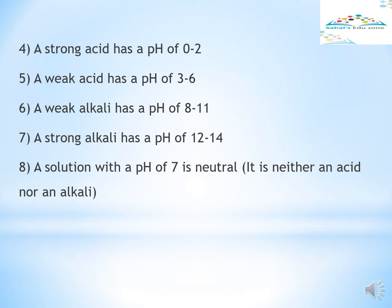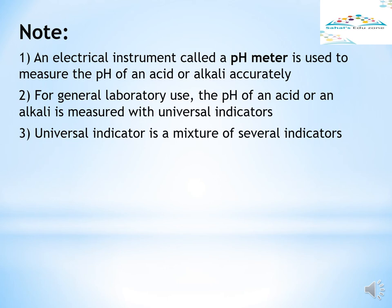A strong acid has a pH of 0 to 2. A weak acid has a pH of 3 to 6. A weak alkali has a pH of 8 to 11, and a strong alkali has a pH of 12 to 14. A solution with a pH of 7 is neutral — it is neither an acid nor an alkali. An electrical instrument called a pH meter is used to measure the pH of an acid or alkali accurately. For general laboratory use, the pH of an acid or alkali is measured with universal indicators. Universal indicator is a mixture of several indicators, which gives different colors over the whole pH range.